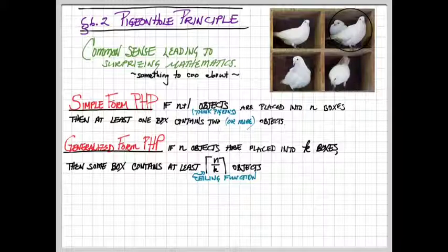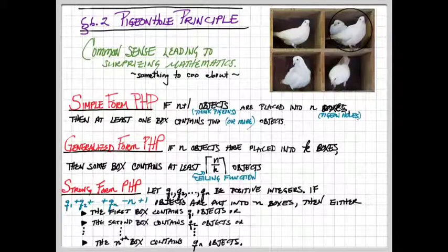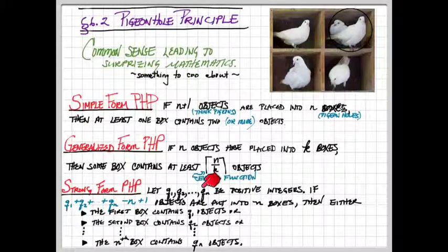And then finally, there's the strong form of the pigeonhole principle, which looks a little bit more complicated. In this case, we're going to specify n integers, one for each box. It's sort of the filling factor for each box. q1, q2, qn. They're all positive integers.